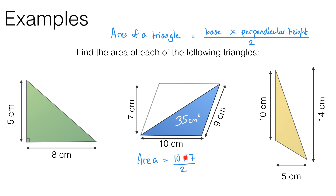10 times 7 is 70. Divide that by 2. That gives us 35. And the units we need for this question are centimetres squared.